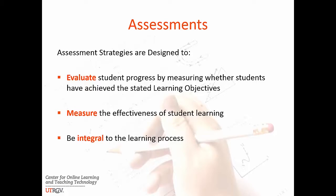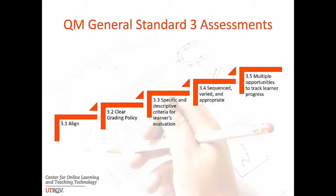Referring back to Quality Matters, QM has five specific standards that support General Standard 3. Assessments: align, have a clear grading policy, are specific and descriptive criteria for learners' evaluation, are sequenced, varied and appropriate, and provide multiple opportunities to track learner progress.